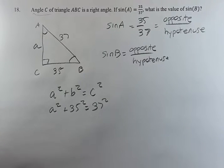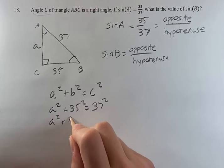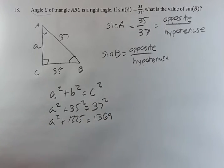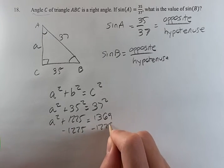Getting the numbers here, that's going to give us a squared plus 1225 equals 1369. You can do that by hand or with a calculator. Subtracting 1225 from both sides.